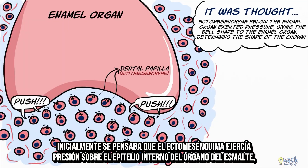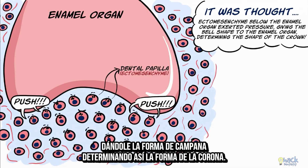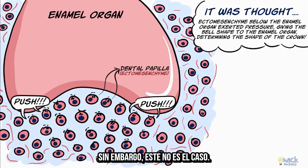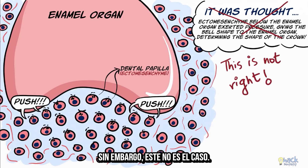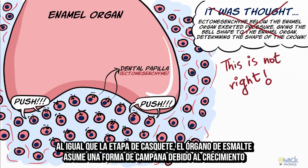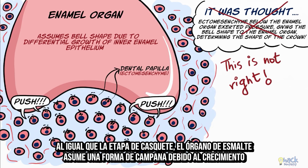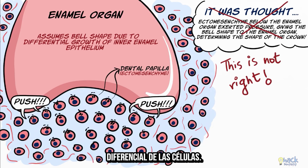It was initially thought that the ectomesenchyme exerted pressure on the inner enamel epithelium giving it the bell shape, thereby determining the shape of the crown. However, that is not the case. Just like the cap stage, the enamel organ assumes a bell shape because of the differential growth of cells.